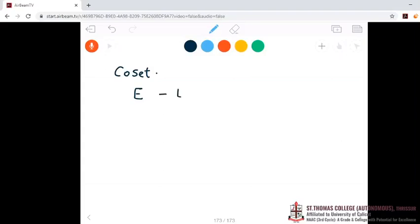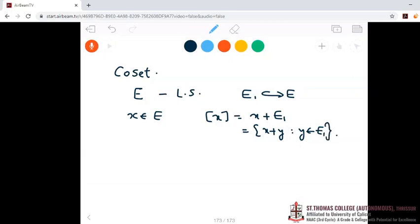Let E be a linear space and E1 be its subspace. Then we have defined for suppose X is an element of E, we have defined coset of X as X plus E1, which is the set of all X plus Y where Y varies over E1.